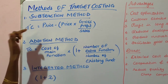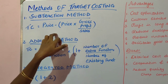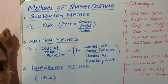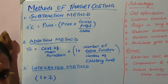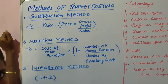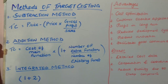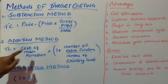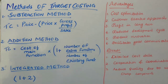Under the subtraction method, the target cost is determined by the formula: target cost = price minus (price × gross profit percentage). Coming to the addition method — this method is considered an extension of the present method, where past data is taken into consideration to determine the target cost. The formula is: target cost = cost of main function × (1 + number of extra functions / number of existing functions).